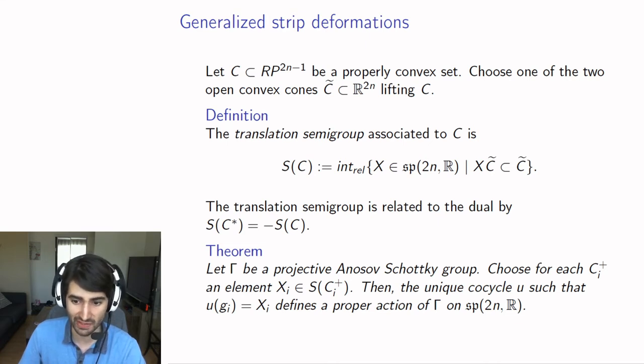For instance, for the examples that I gave before, the tetrahedra, those have fairly large translation semi-groups.